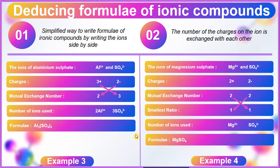Let's look into Example 4 for the ions of magnesium sulfate. The formula is Mg²⁺ and SO₄²⁻. The charges for magnesium are 2+ and for sulfate 2−. By mutual exchange, 2 positive becomes 2 and 2 negative becomes 2. The smallest ratio here becomes 1 because 2+ and 2− already offset each other. So the number of ions used: magnesium is Mg²⁺ and sulfate is SO₄²⁻, and we write the formula as MgSO₄.